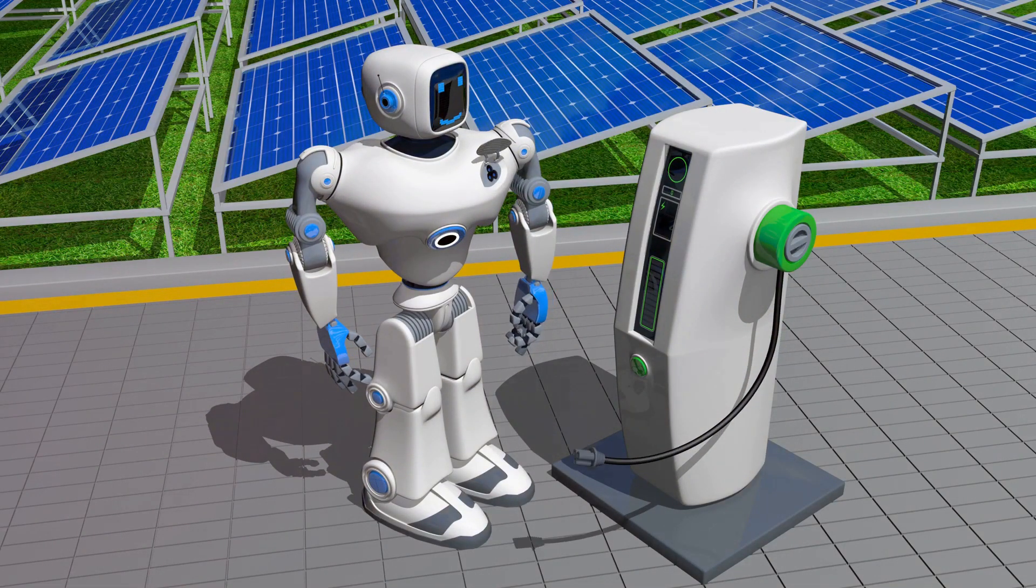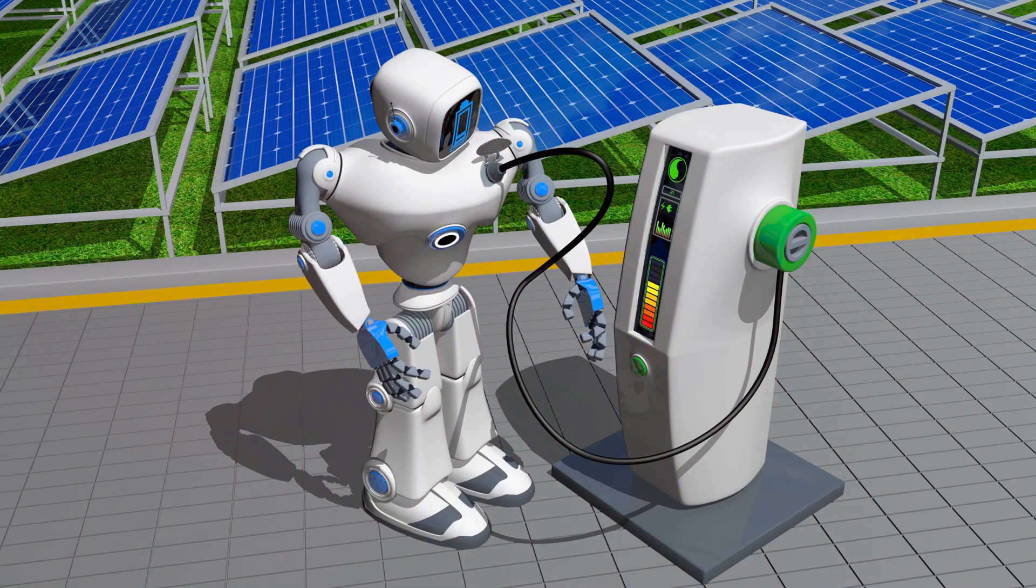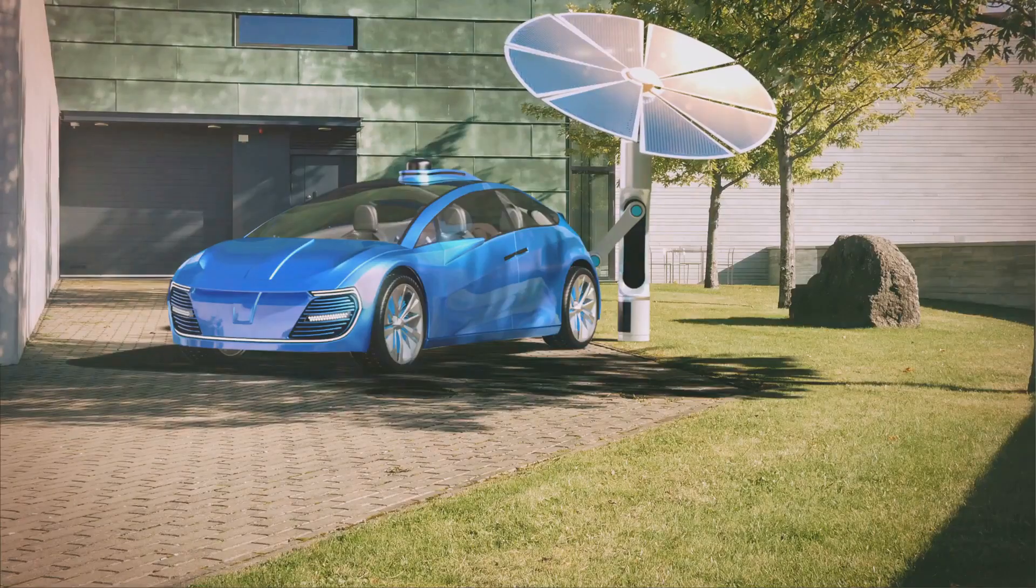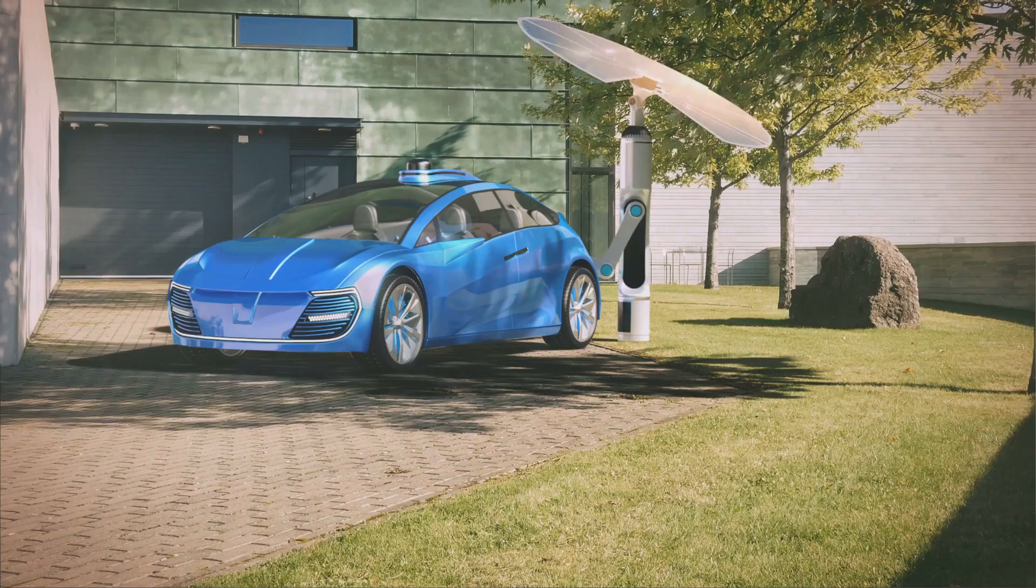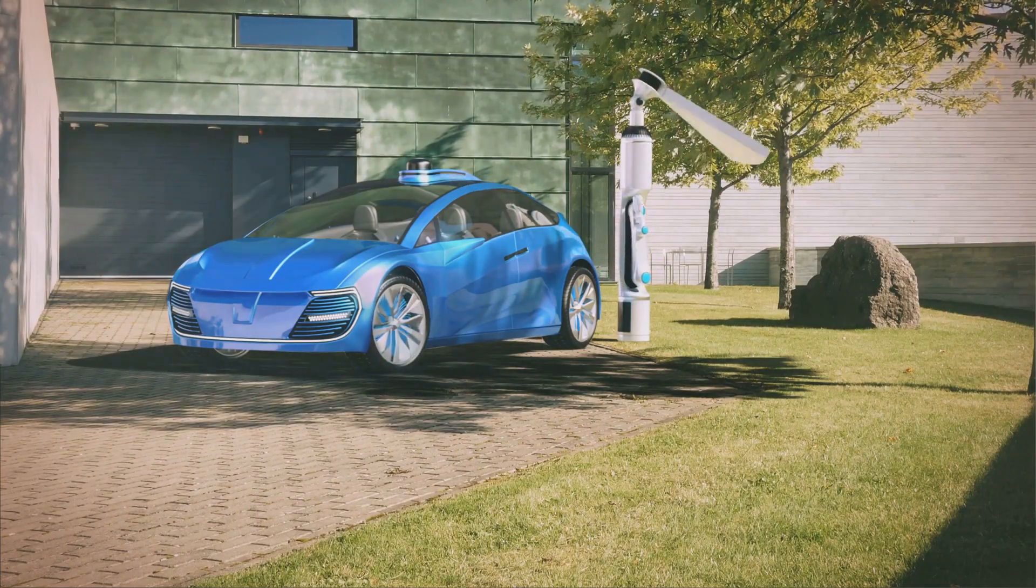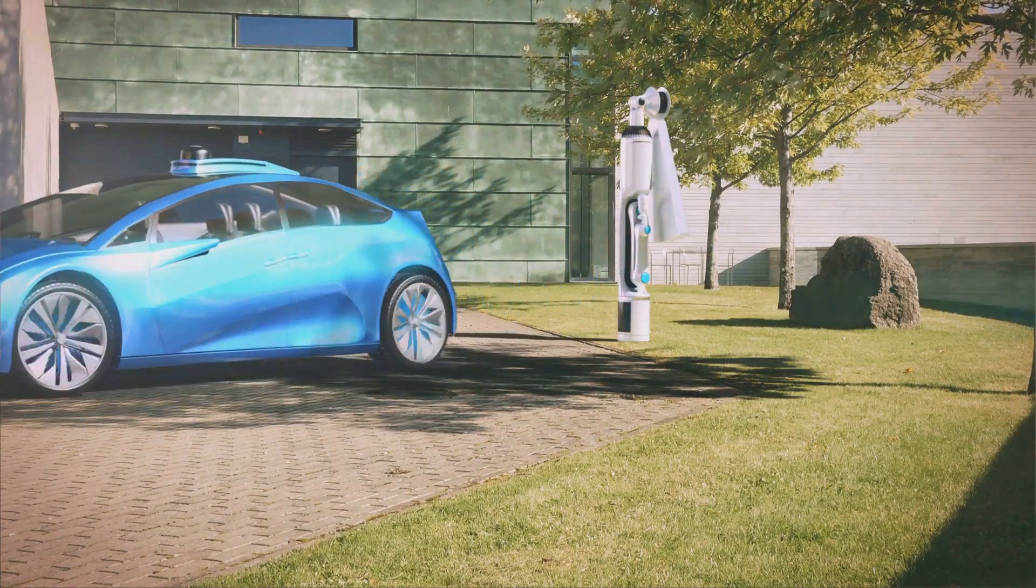Now, onto the components of a robot. A typical robot comprises a power supply, sensors, actuators, and a controller. The power supply, as the name suggests, provides the energy needed for the robot to function. It could be a battery, a solar panel, or even a plug into the wall.